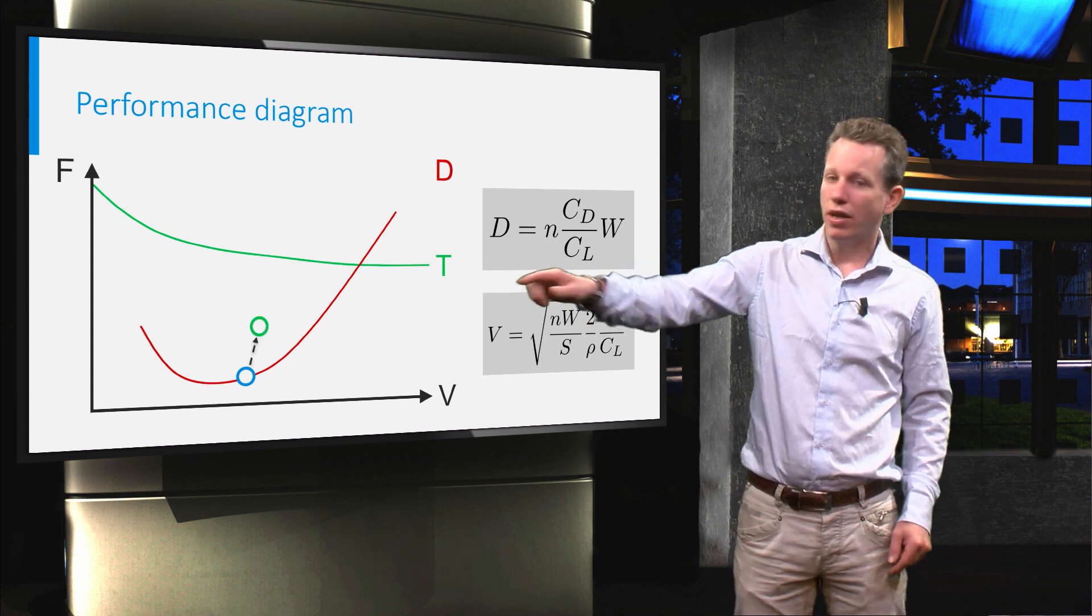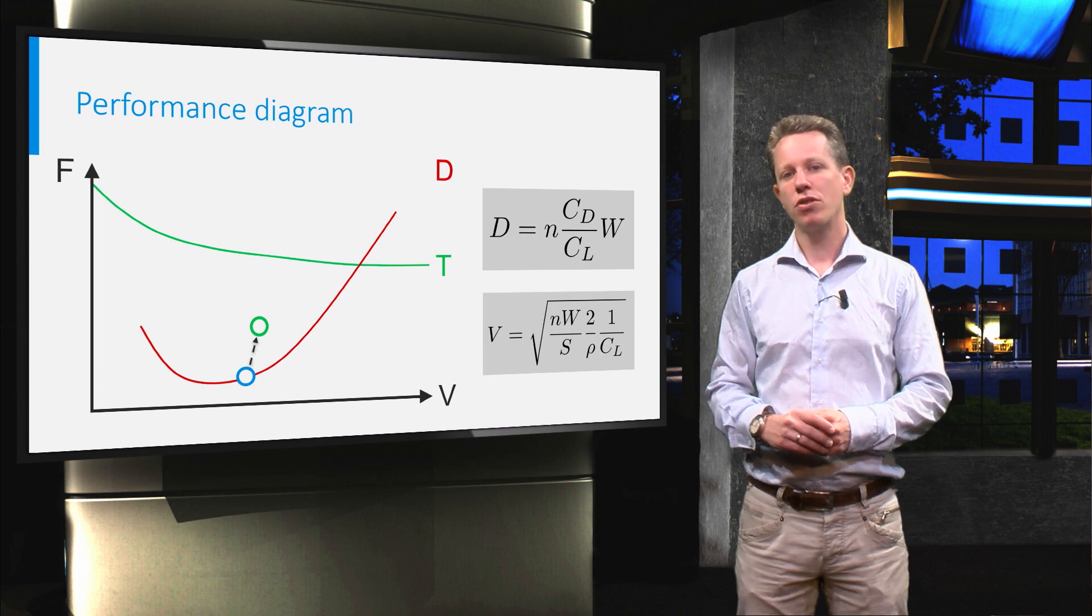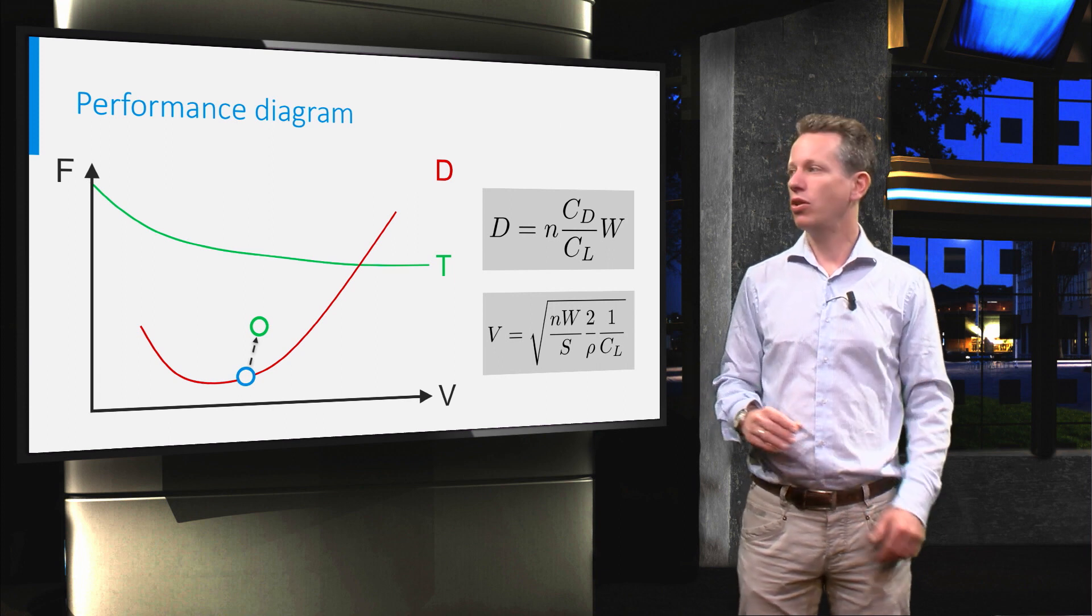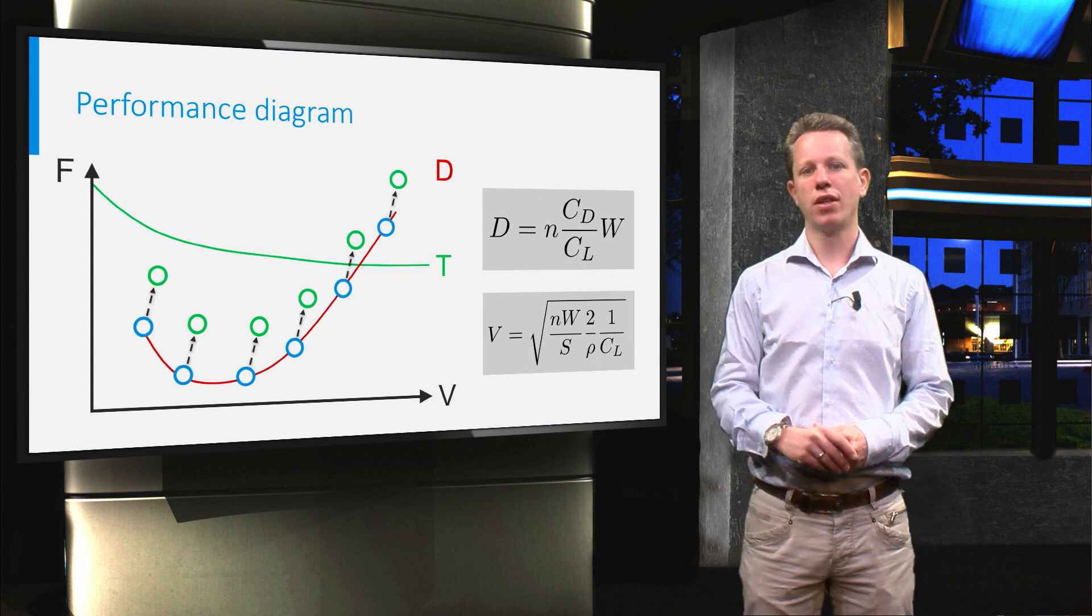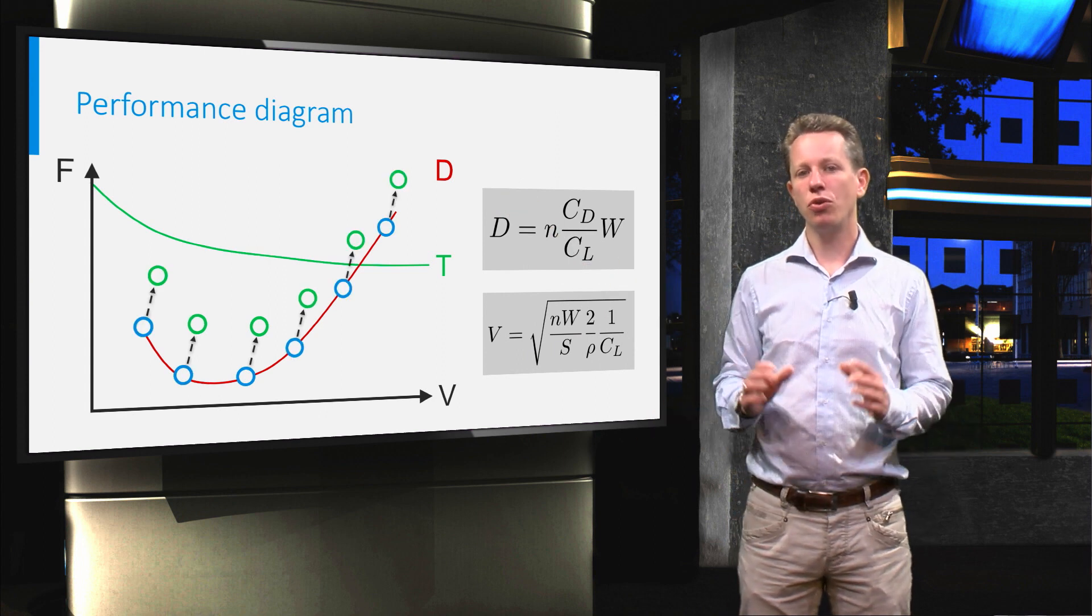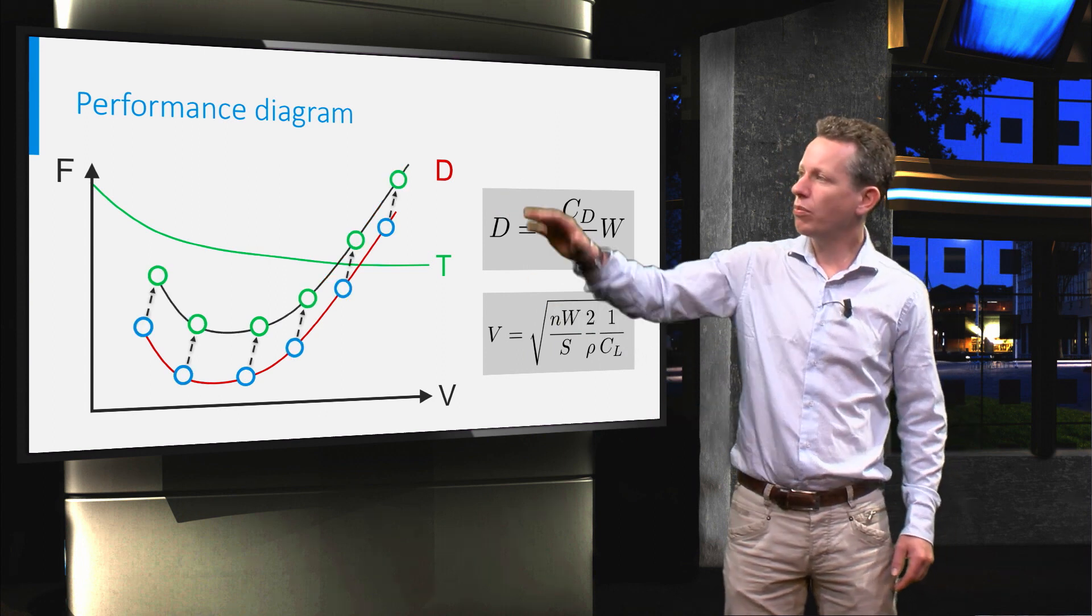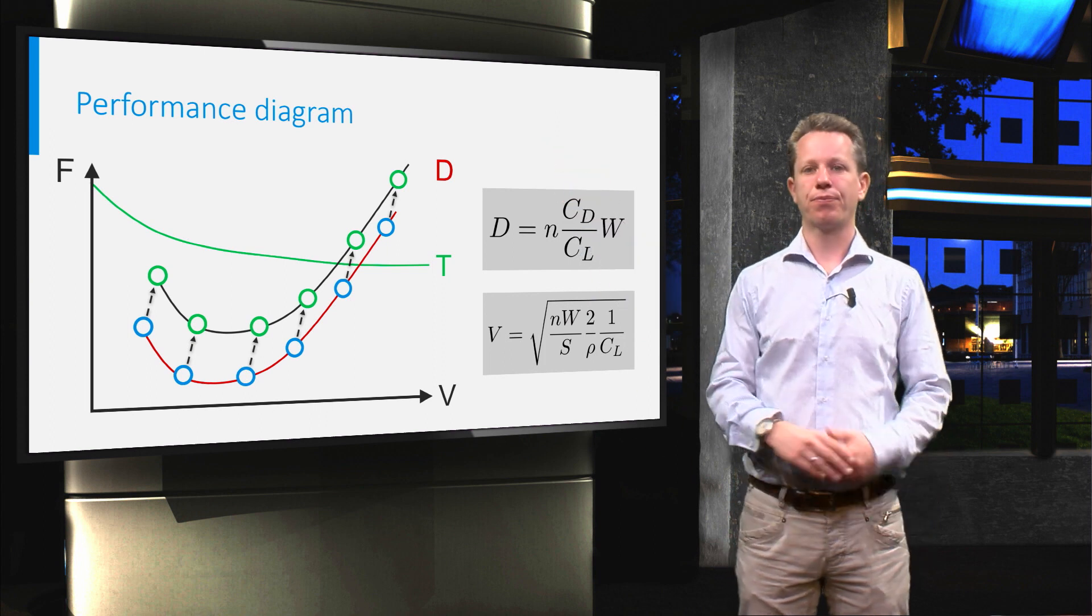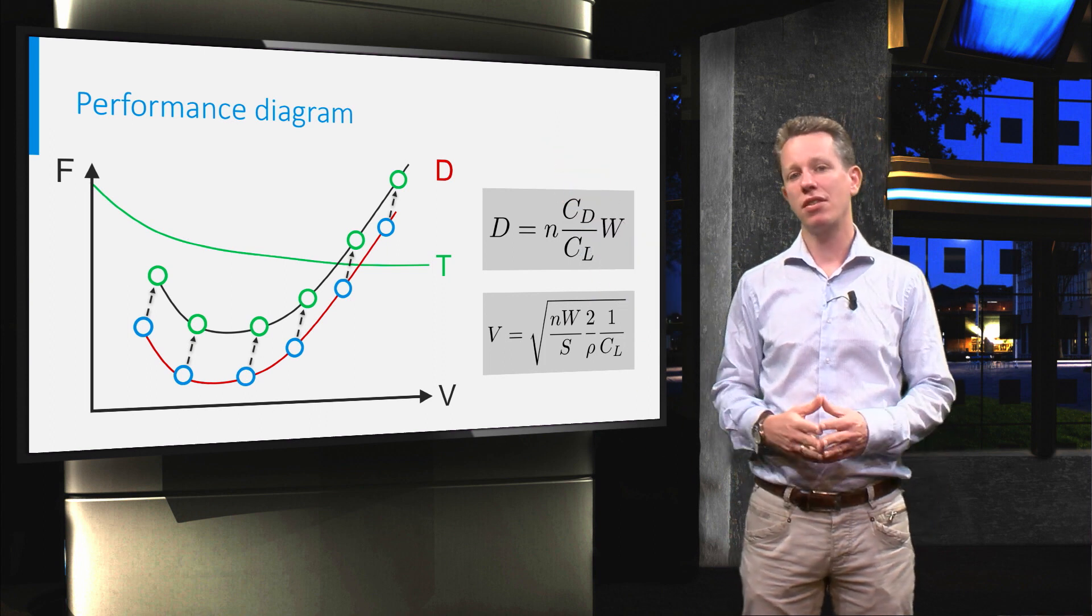So this point over here is going to move upwards and to the right. You could do that exercise for this complete graph. As a result the whole drag curve shifts upwards and to the right. Two interesting things can be observed.